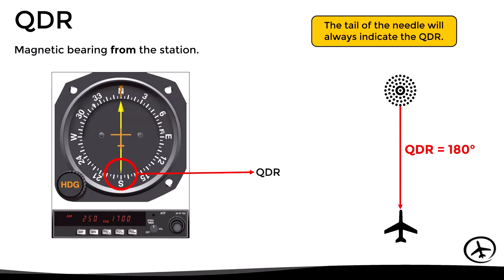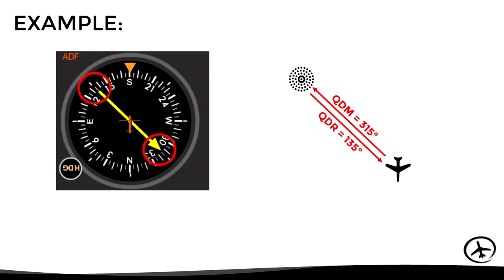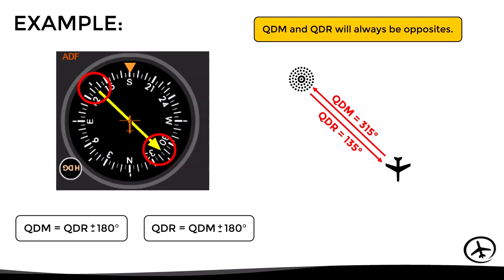Having seen these two concepts, let's look at an example. In this case, we can see that the aircraft is flying southbound, and according to the needle of the ADF, the QDM would be 315, since it is the bearing indicated by the tip of the needle. With this, we can see that by definition, QDM and QDR will always be opposites.